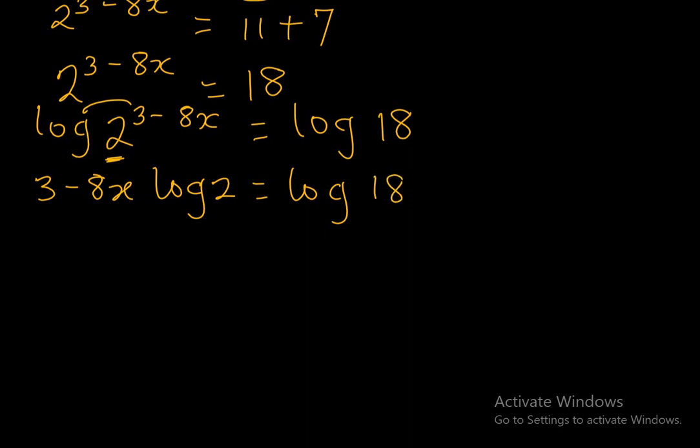Remember we want to get the value of x. So now for 3 minus 8x to stand alone, you divide both sides by log 2. So log 2 cancels log 2. So we have 3 minus 8x equal to log 18 divided by log 2.